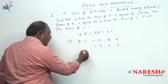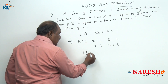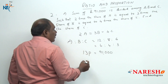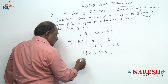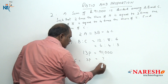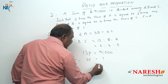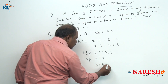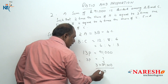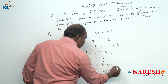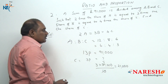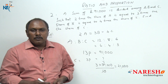That means the total money should be divided into 13 parts. So 13 parts equals 91,000. We want the share of C. C is going to get 3 parts. So 3 parts is how much? Cross multiplying: 3 into 91,000 divided by 13. 13 sevens are 91, so 3 into 7 is 21. The answer is rupees 21,000. So the share of C would be 21,000 rupees.